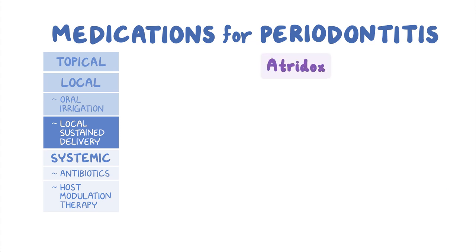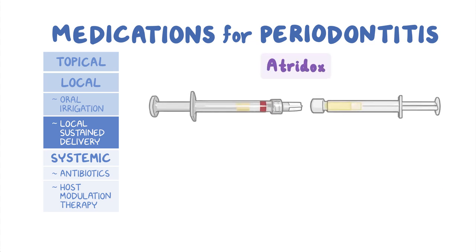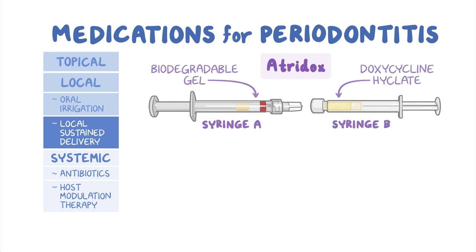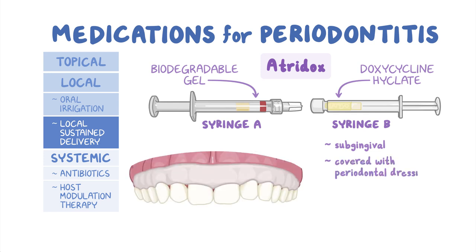The next one is atrodox, which is a product composed of a two-syringe system. Syringe A contains biodegradable gel, while syringe B contains doxycycline hyclate, which is a broad-spectrum antibiotic with a bacteriostatic effect. When prepared, atrodox is administered via a syringe into a subgingival region. Once administered, periodontal pockets that contain doxycycline should be covered with a periodontal dressing or dental adhesive. Just like periochip, atrodox is first-order release, but the MIC-90 is lower.